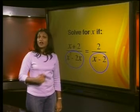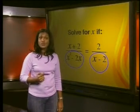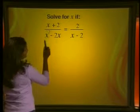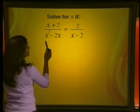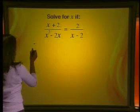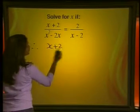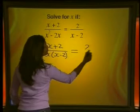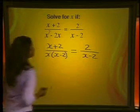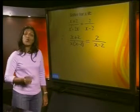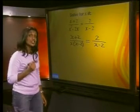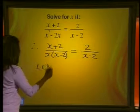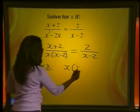Remember, we try to keep our calculations as simple as possible. To do this, we must find the lowest common denominator. Previously we factorized x² - 2x to be x(x - 2). So we can write this expression as (x + 2) divided by x(x - 2) is equal to 2 divided by (x - 2). Now what is the LCD? What number includes all of these factors? The LCD is x multiplied by (x - 2).